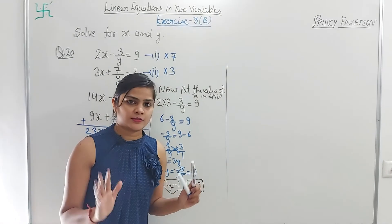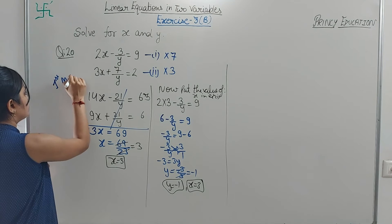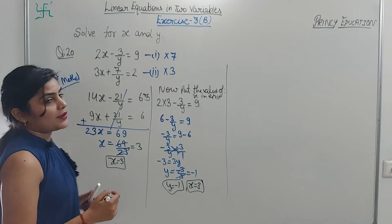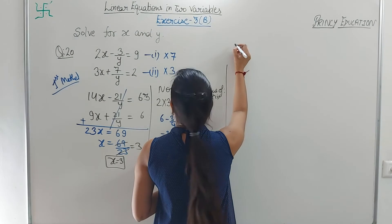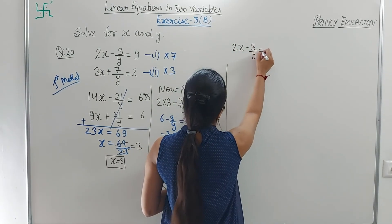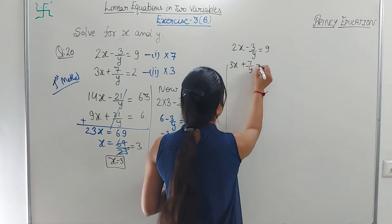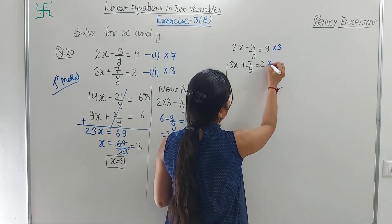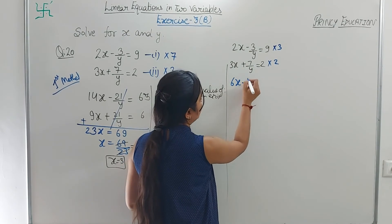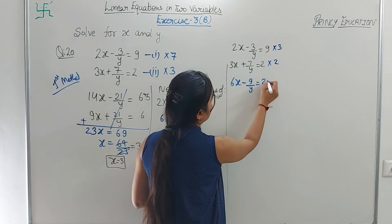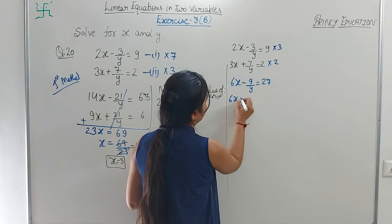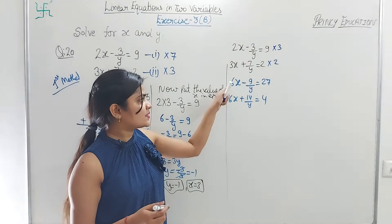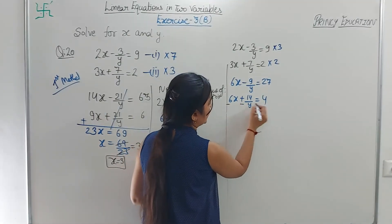This was the first method. Now second method: same equations 2x - 3/y = 9 and 3x + 7/y = 2. To eliminate x, multiply equation 1 by 3 and equation 2 by 2: 6x - 9/y = 27, and 6x + 14/y = 4. Same sign for x, so subtract.